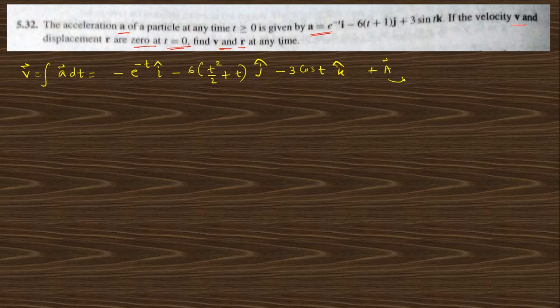For the velocity vector, you know integration of a vector with respect to dt. So if you integrate this with respect to t, what we will get: e to the power minus t i-cap; the integration of minus 6(t² / 2 + t) gives j-cap; and minus 3 cos(t) k-cap, plus some constant integration vector.